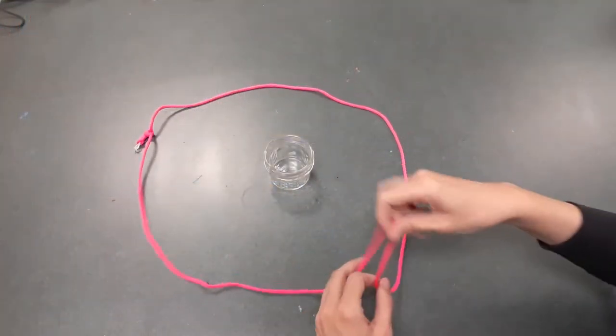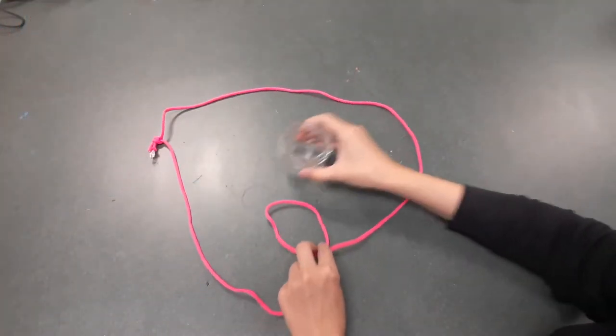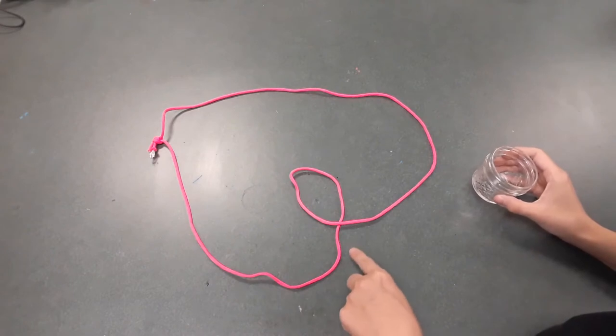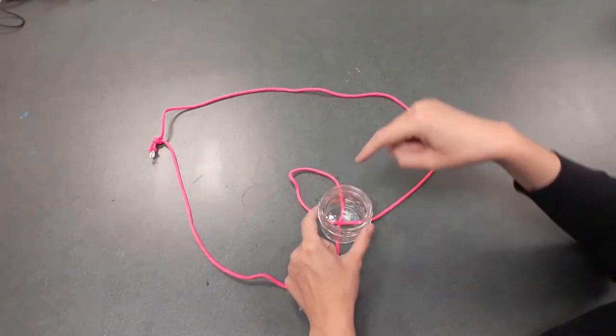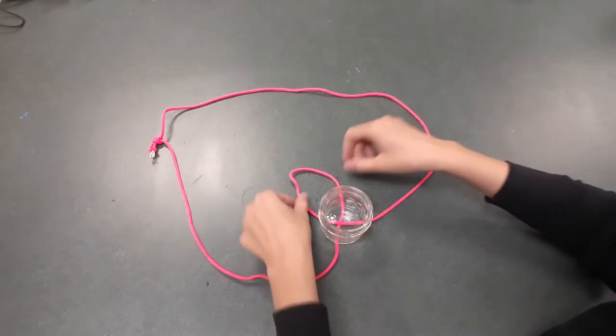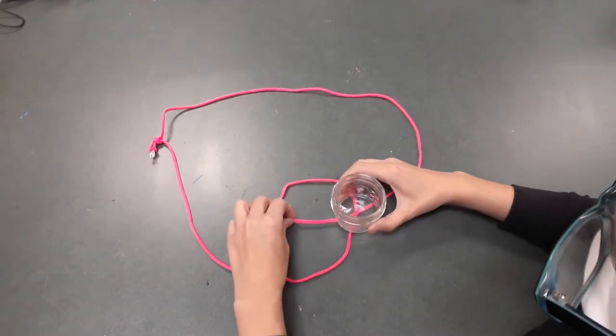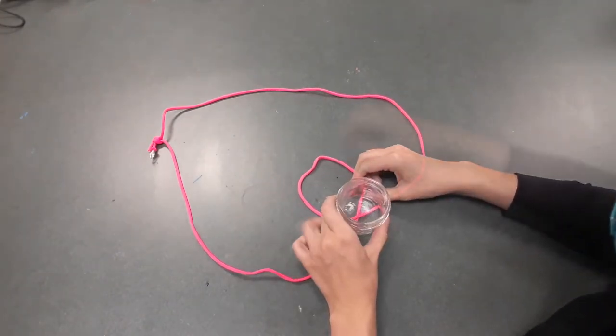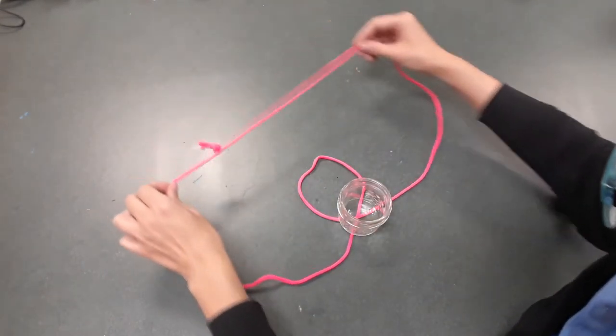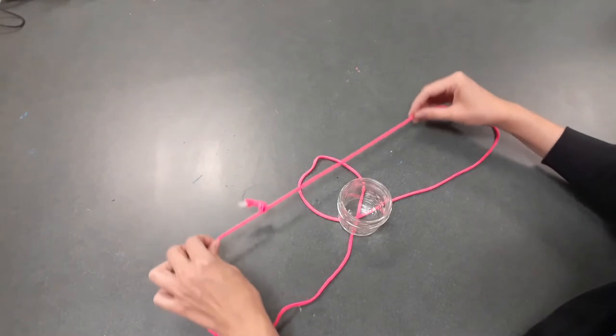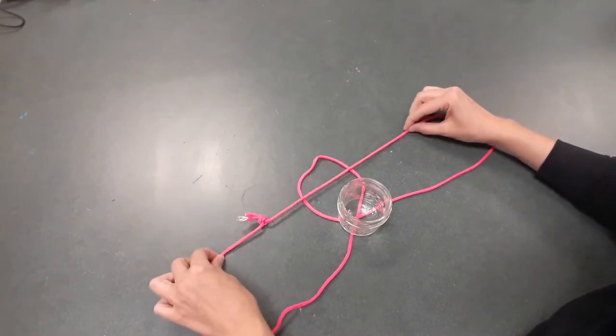Step two, now that you've got your big circle, go ahead and pick up part of the circle and twist it in on itself once so you've got a circle within a circle and right where those pieces cross that's where you're going to set your jar. So now go ahead and take the top part of that circle and set it across the littler one so that it kind of makes a star situation.